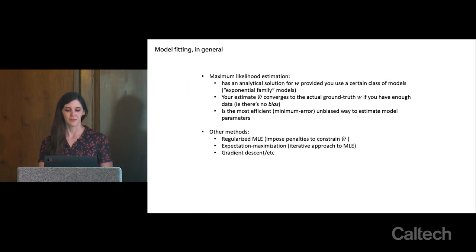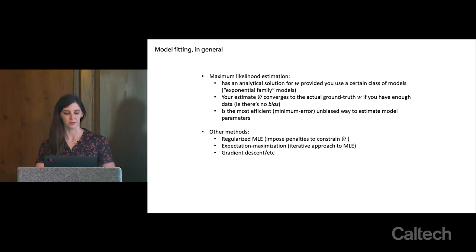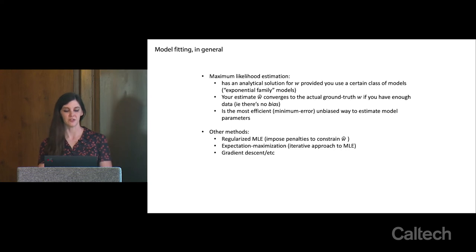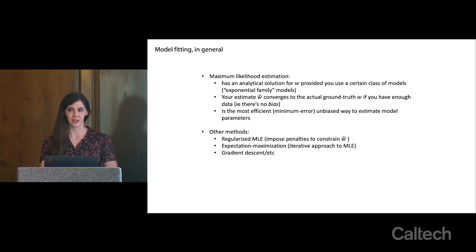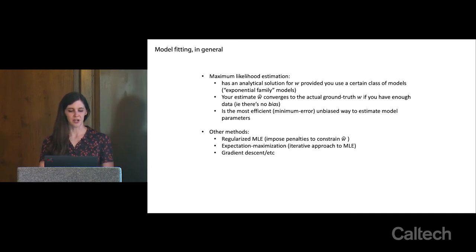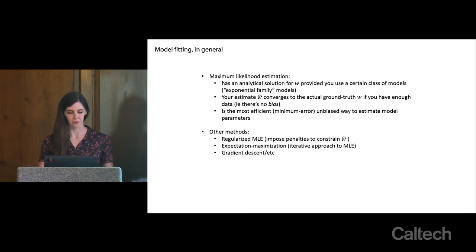For these kinds of models, you have an analytical solution for exponential family models for the maximum likelihood estimate of your parameters, and it converges to the ground truth value. There are other ways of estimating parameters — you could include regularization, use expectation maximization if you can't explicitly solve for w, or do gradient descent. If your model is nonlinear and fancier, you won't be able to just take a derivative and solve; you might have to search for a local minimum in your likelihood function.